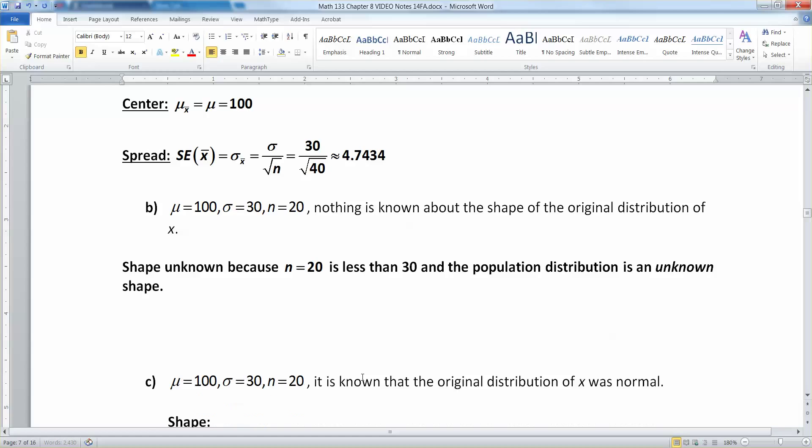So I just typed that up. We don't know the shape. The shape is unknown because n equals 20 is less than 30, and the population distribution is an unknown shape. If we knew it was normal, that would be one thing. But we don't know that it's normal, and therefore 20 is not a big enough sample size for us to more or less guarantee normal.